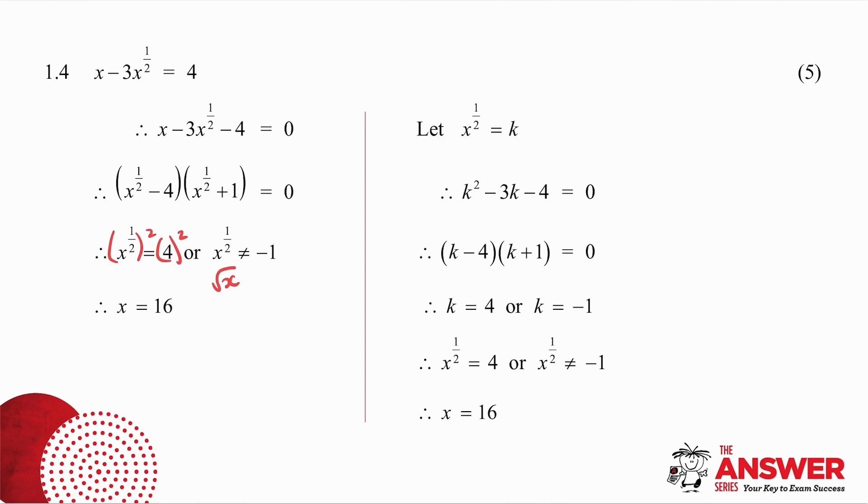Now if you're not sure with the factorizing, what I can do is I can do it slightly differently. I can say let x to the half be equal to k. This is x to the half squared. In other words, it's k squared. This then becomes minus 3k, and I've got minus 4 equal 0. This is a much easier trinomial to factorize and to get my values of k. But I know that k is equal to x to the half. So now in place of k, must go x to the half. And then I end up with exactly the same as I had in my first method. So whichever method you find easier, do it that way.